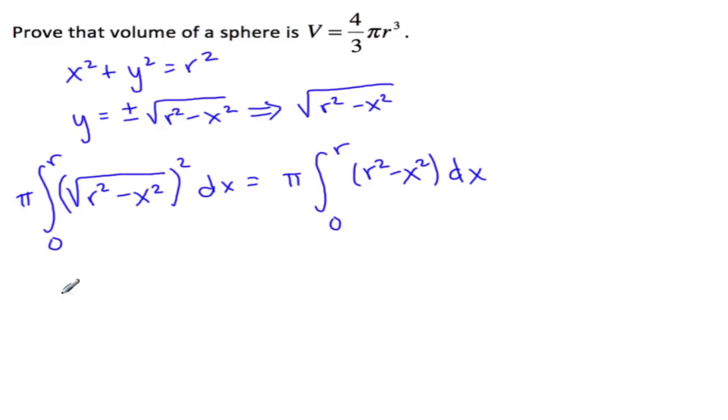So now we'll have pi times the integral of r squared. Since this is just a constant, it's going to be r squared x minus one-third x cubed, from zero to r.